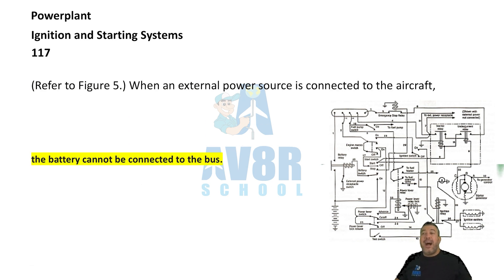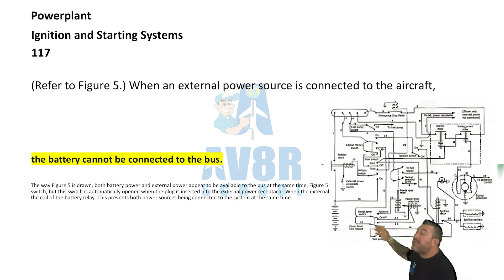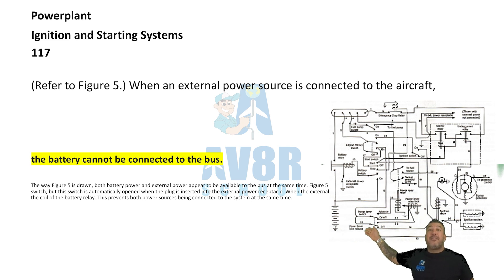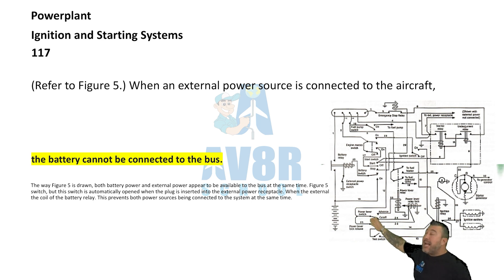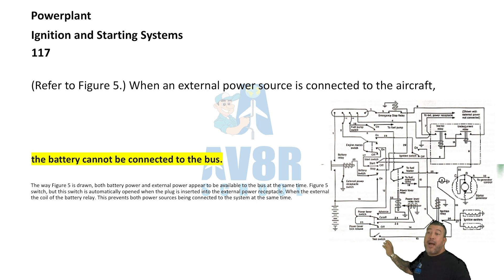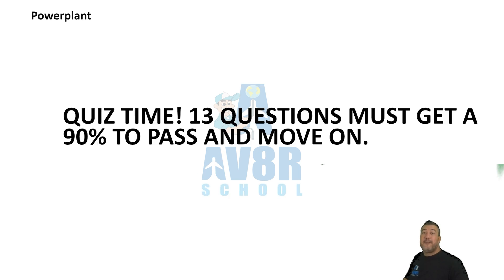Number 117. Referring to figure 5, when an external power source is connected to the aircraft, the battery cannot be connected to the bus. When external power is connected, the battery cannot be connected to the bus. Take a quick quiz and I'll see you soon.